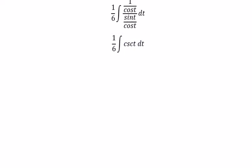And now we got the final answer that should be about negative 1 over 6 natural log of the absolute value of cosine t plus C.